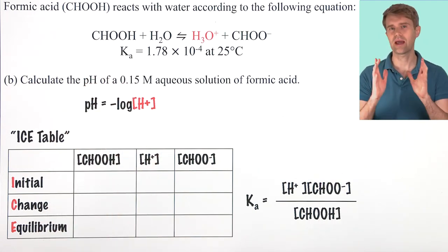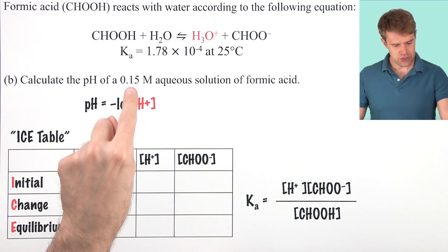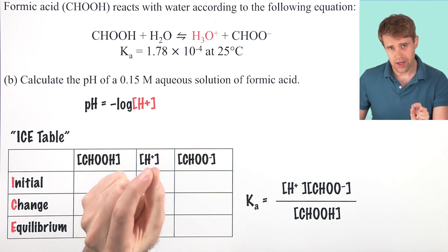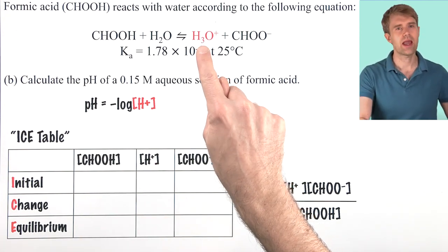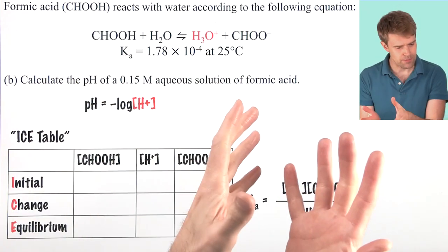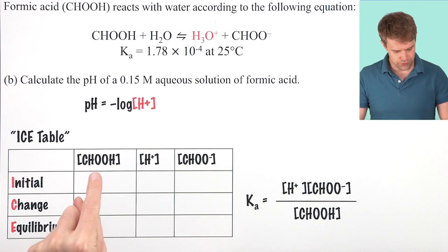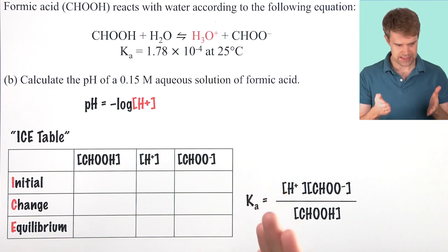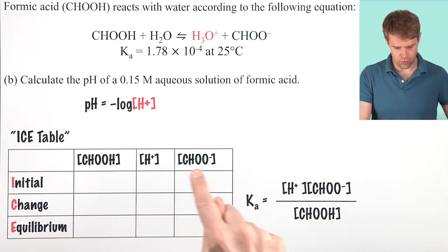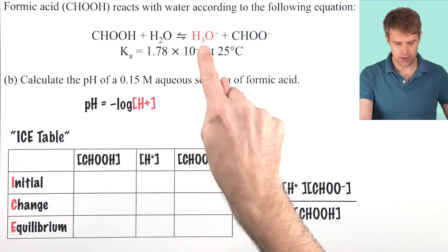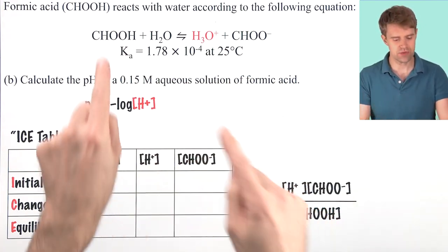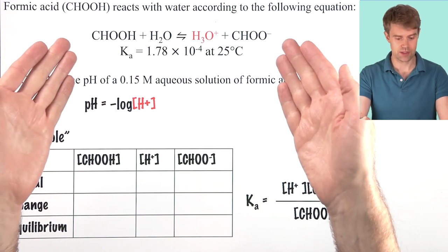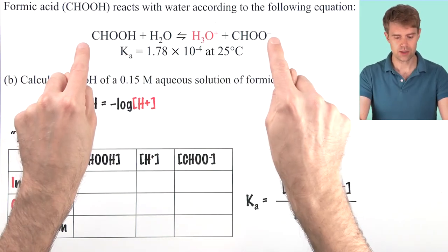Remember, formic acid is a weak acid. So, if we start with a concentration of 0.15 molar, only some of that is going to ionize to make H-plus, not all of it, just some of it. So, to find the concentration for these chemical species at equilibrium, we're going to use an ICE table. This includes all of the relevant participants in our equilibrium expression. And it's going to tell us how many of each we have when this reaction reaches equilibrium.